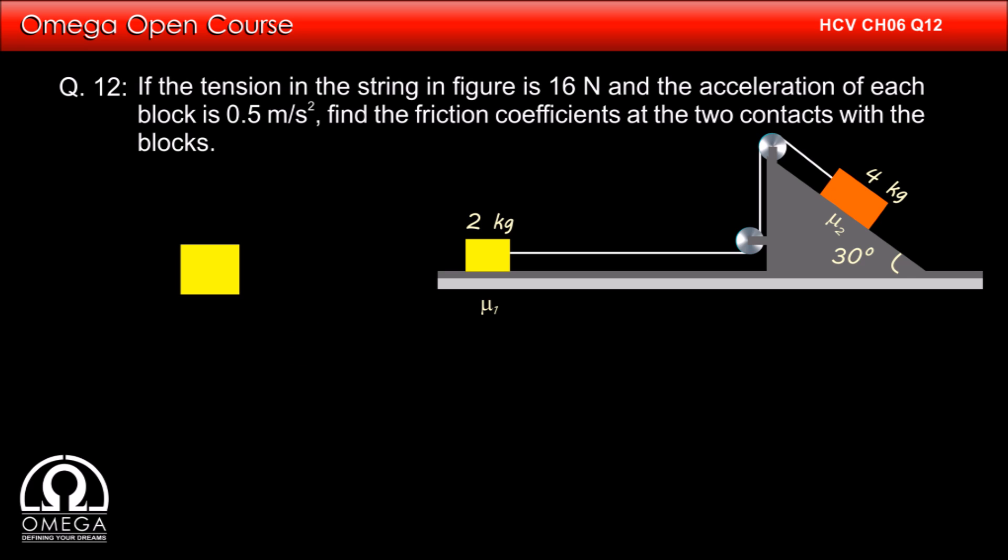Let us first draw the free body diagram of the 2 kg block. If we denote its mass with M₁, then gravitational force of M₁g is acting on it in vertically downward direction. Normal reaction from the floor, N₁, is pushing it upward.